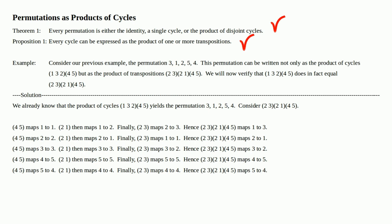Finally, the transposition (4, 5) maps 5 to 4. Then (2, 1) maps 4 to 4 because 4 doesn't appear in that transposition. Finally, (2, 3) maps 4 to 4 because 4 does not appear in that transposition. Hence, (2, 3) times (2, 1) times (4, 5) maps 5 to 4. So 5 goes to 4, which gets mapped to 4, and we conclude that 5 gets mapped to 4.